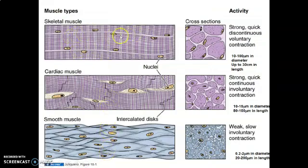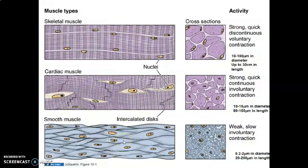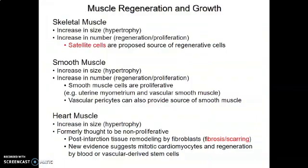In summary: skeletal muscle is cylindrical, multi-nucleated with peripheral nuclei, and striated; cardiac muscle is branched, striated, with intercalated discs and one centrally located nucleus; smooth muscle is spindle-shaped, with a single central nucleus and no striations. Regarding regeneration, skeletal and smooth muscles can hypertrophy and undergo proliferation, while heart muscle has limited regenerative capacity.